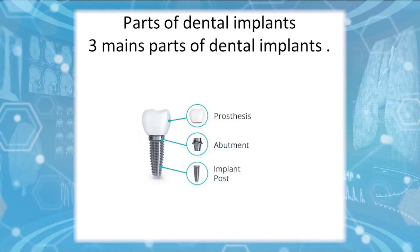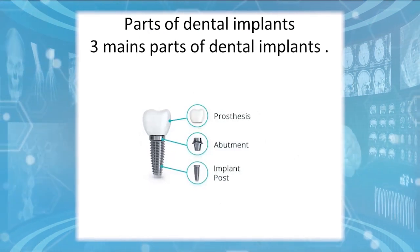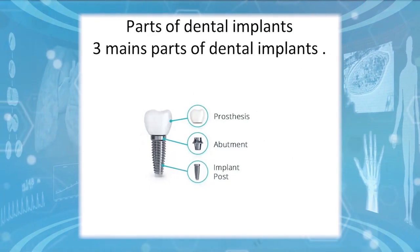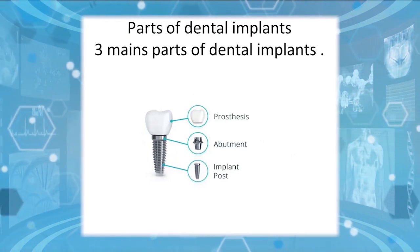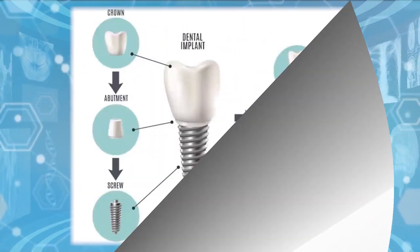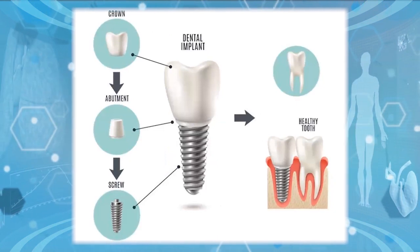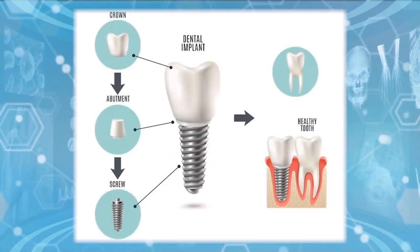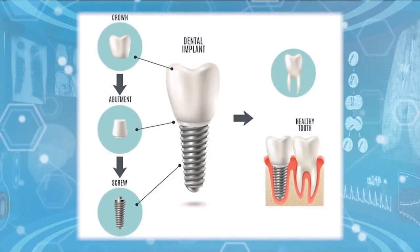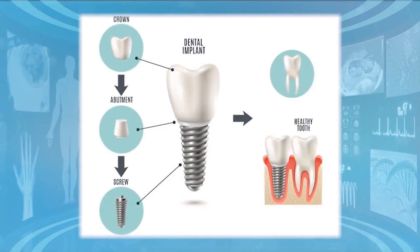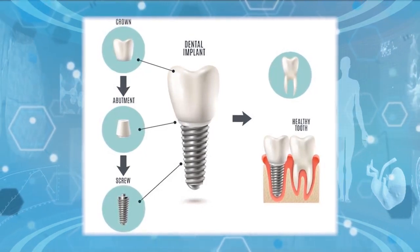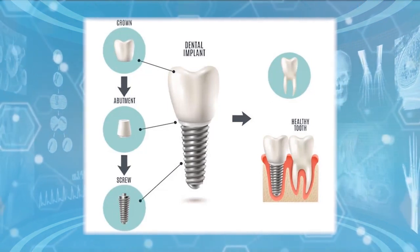Dental implants have three main parts: the prosthesis, the abutment, and the implant. The implant is the part surgically placed in the human bone, and the crown is attached to the implant by a component known as the abutment. Unlike a natural tooth, which has a periodontal ligament, the implant does not — it is fused to the bone by osseointegration or fibro-osseointegration.